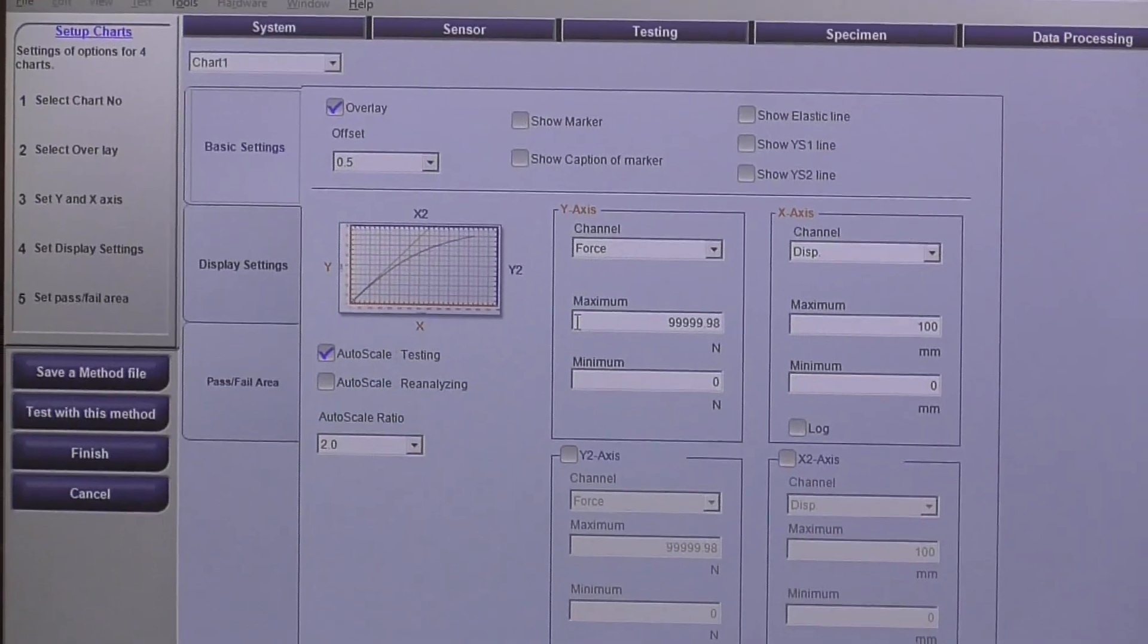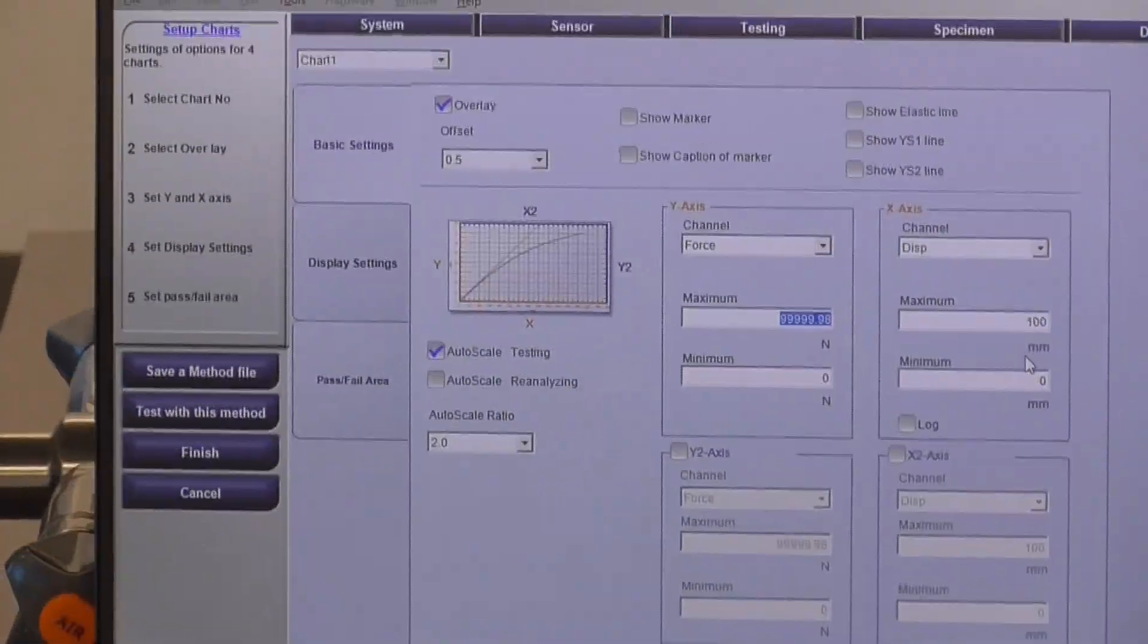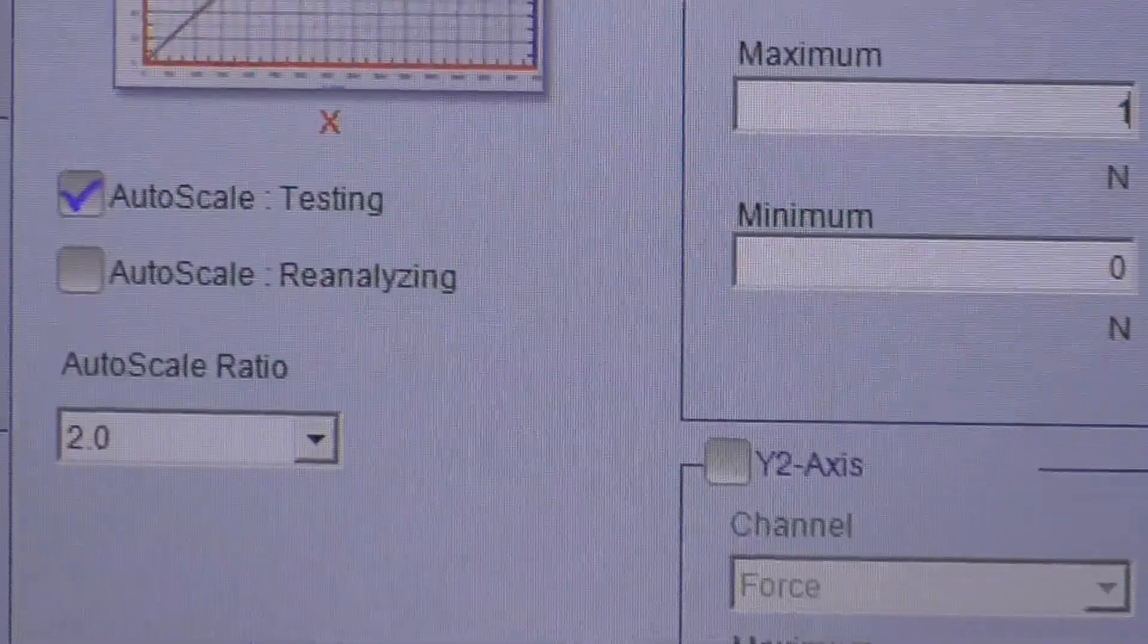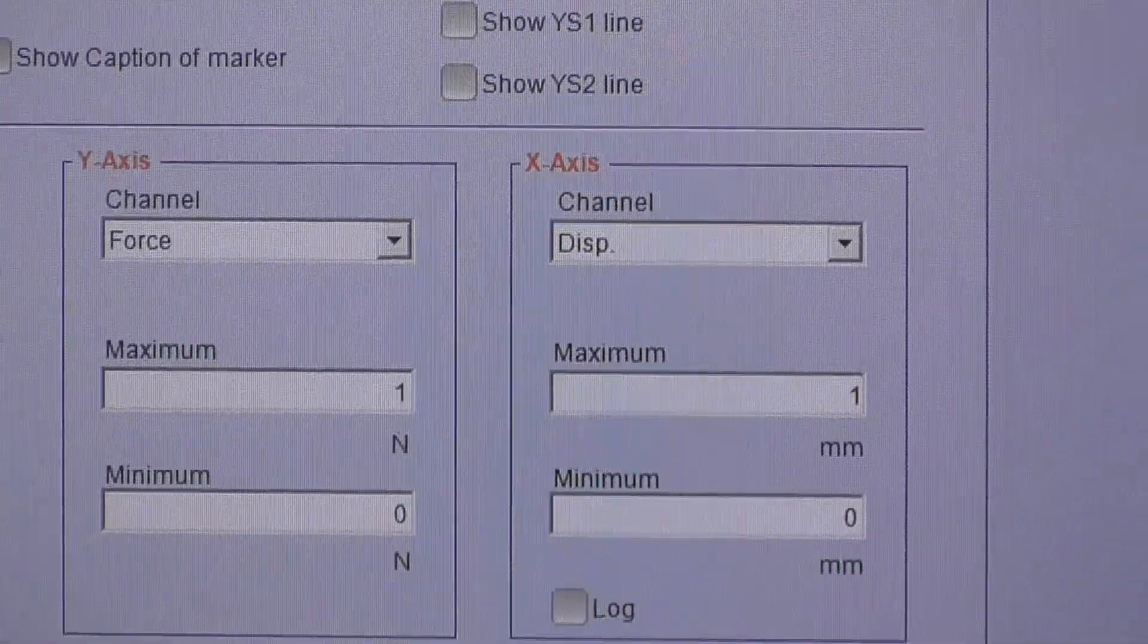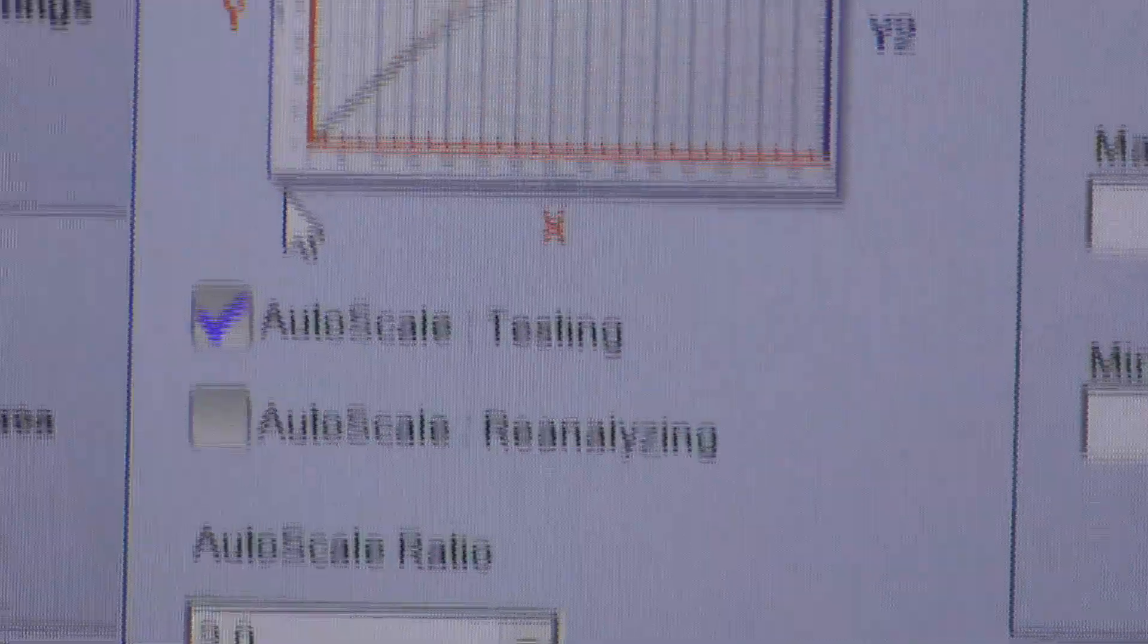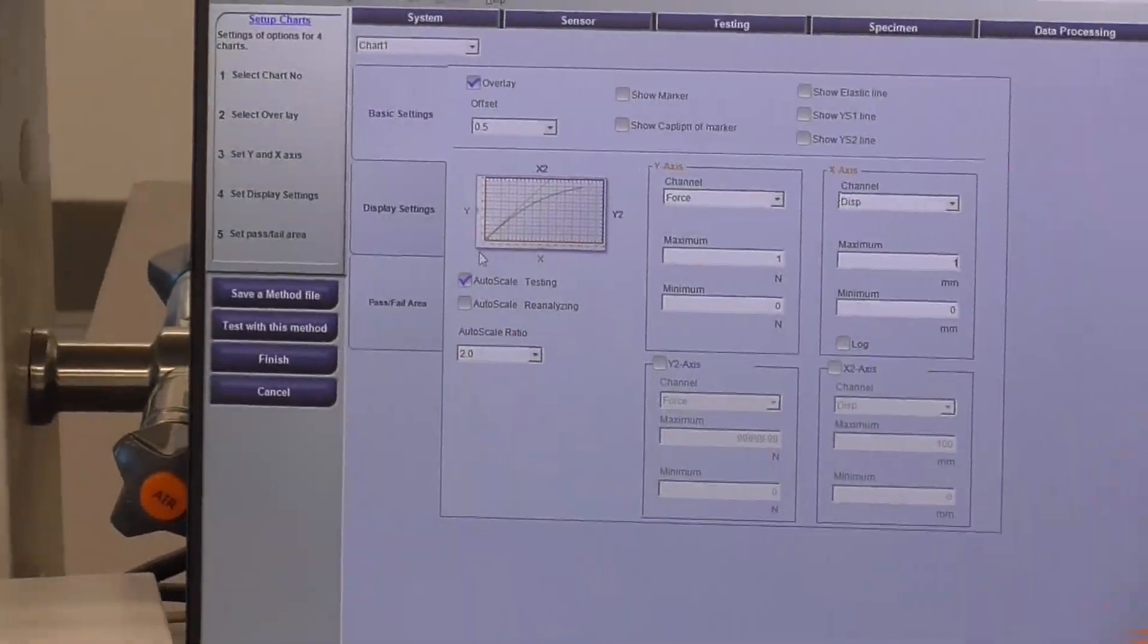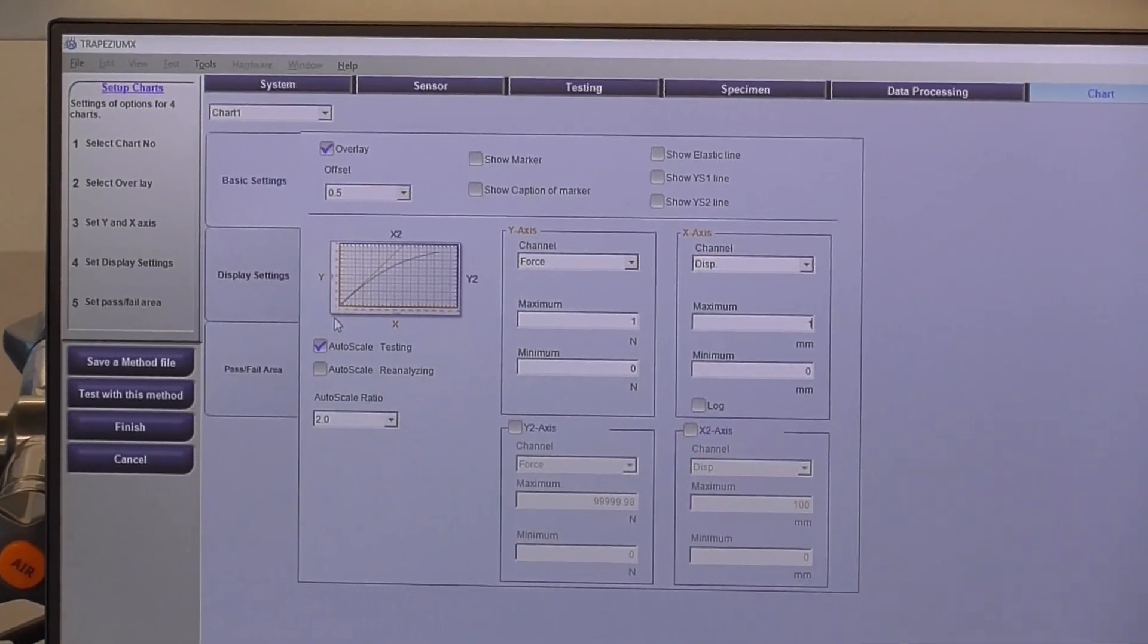Lastly, something that I like to do is I like to set the maximum of the graphs at a very low value. So I'm setting it at one newton and one millimeter. And then I have auto-scale turned on. So in that way, when you're starting the test, you can actually see the data propagate across the screen. As opposed to looking at this very large, especially if you're going to a 300-kilonewton capacity, looking at a very large graph and having a very small amount of data kind of work its way across the screen.